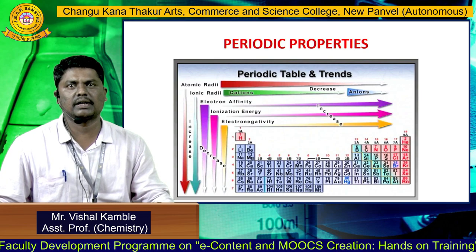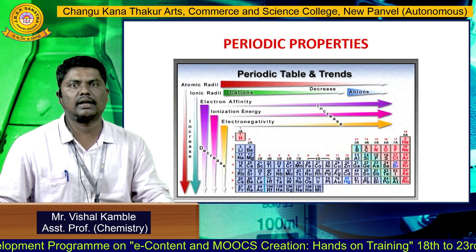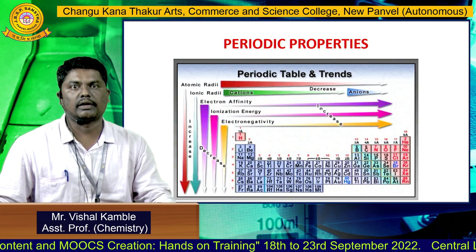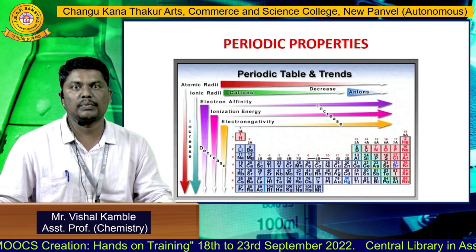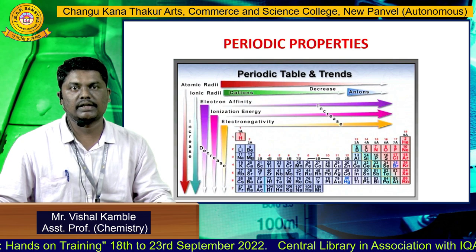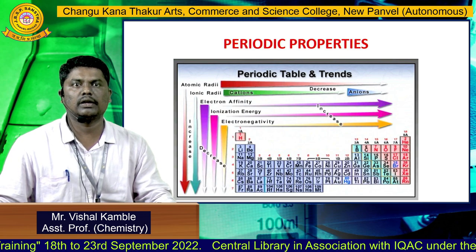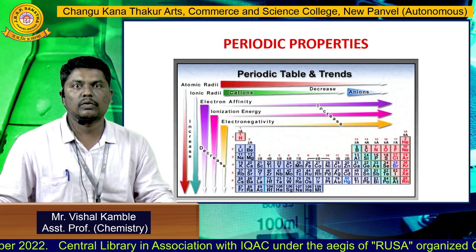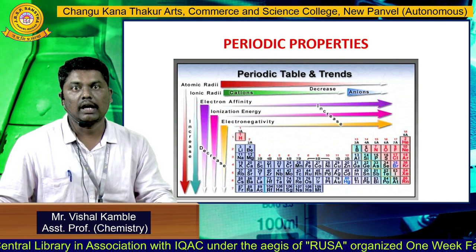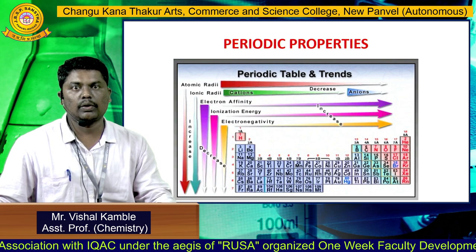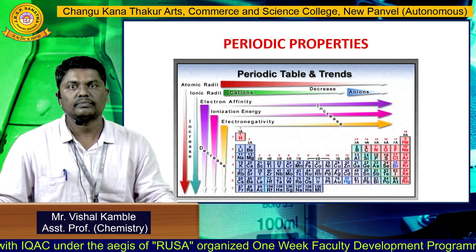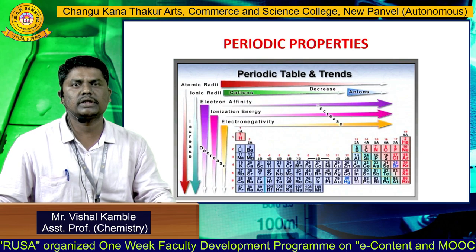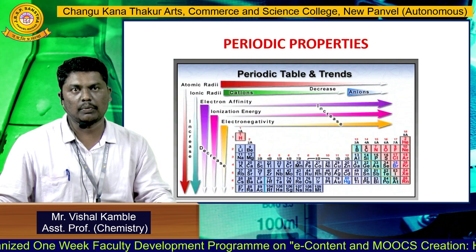The second part of the topic covers periodic properties and trends. There are different periodic properties: atomic radius, ionic radius, electron affinity, ionization energy, and electronegativity. These properties decrease along a period. Along a group, atomic radius, ionic radius, electron affinity, ionization enthalpy, and electronegativity all increase. The periodic table has seven periods and 18 groups.